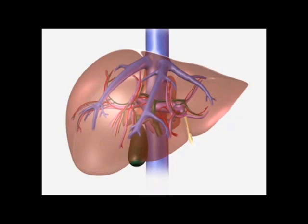The liver is invested with peritoneum except on the posterior surface, where the peritoneum reflects onto the diaphragm, forming the right and left triangular ligaments. The undersurface of the liver is concave and extends down to a sharp anterior border. Despite the complex internal anatomy of the liver, it is devoid of many external markings.